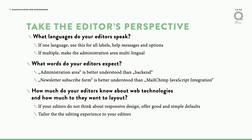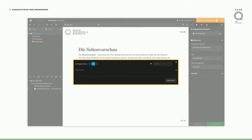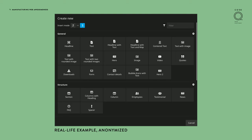The whole talk is about thinking in this perspective. Now we're getting more technical. How can we build easy-to-understand node types? In our code it's often very clear what the difference is between different node types, but for editors it can be complicated. As an editor, you start with the node creation dialogue. You click 'I want to create content' and then you see something like this. It's really hard to figure out: do I want a headline, a text, a headline with text, a headline with text and map, or the center text? It can be overwhelming.